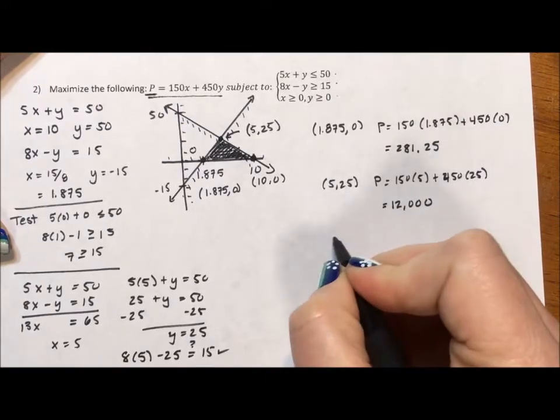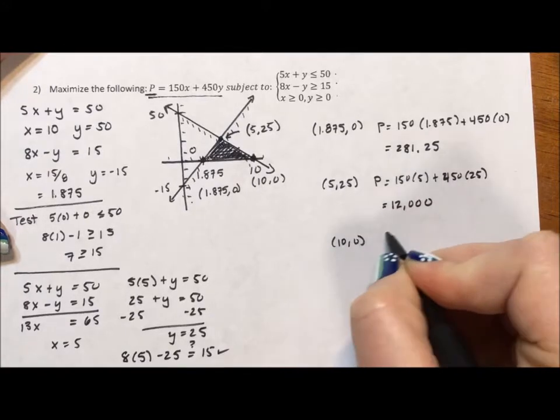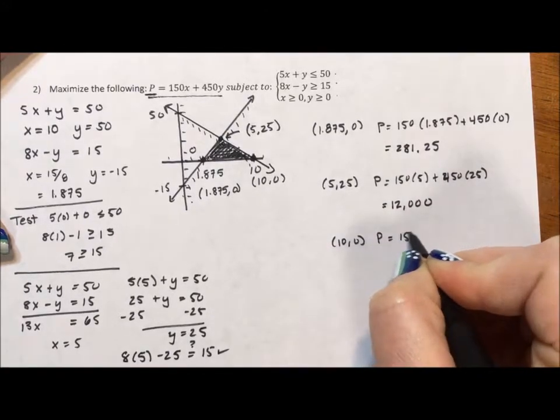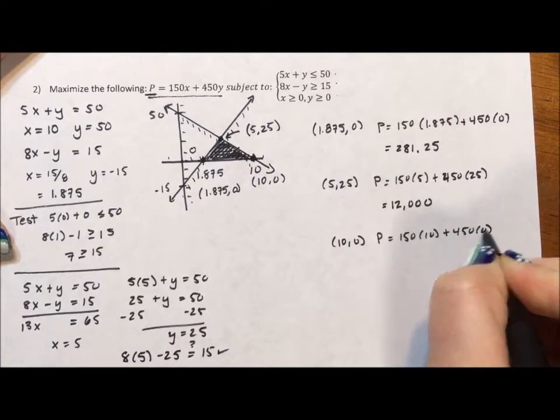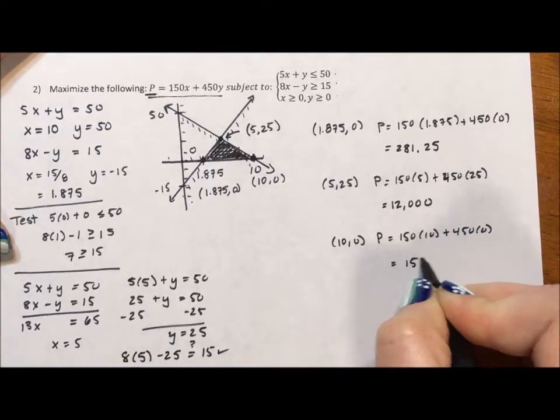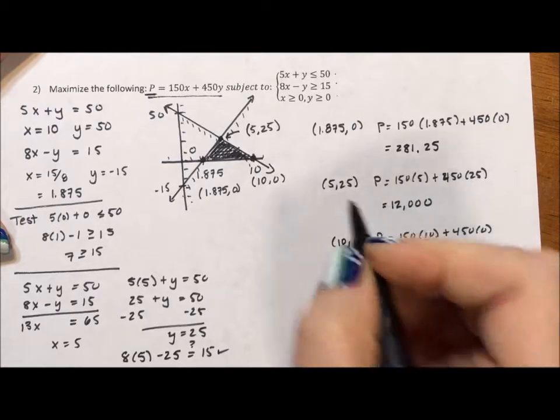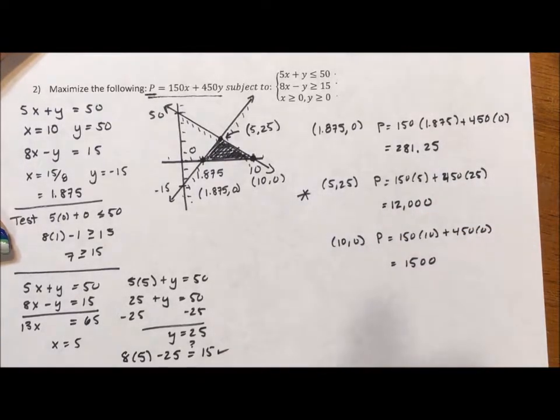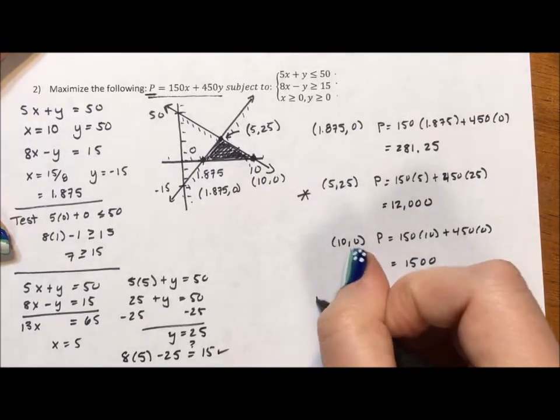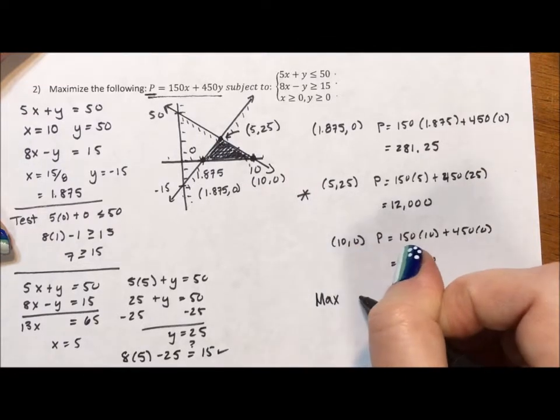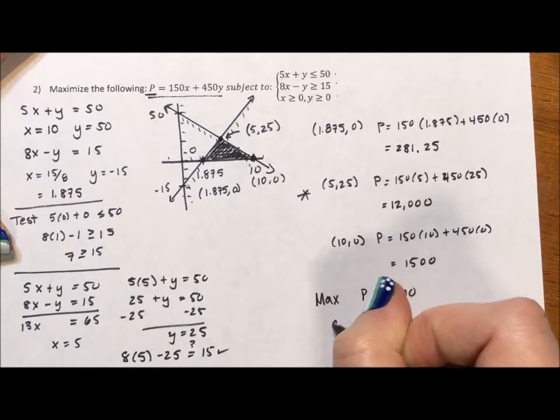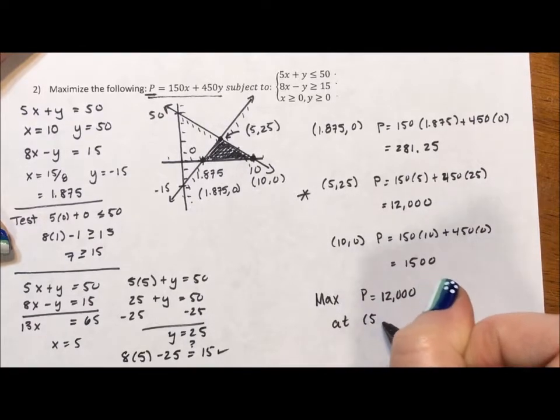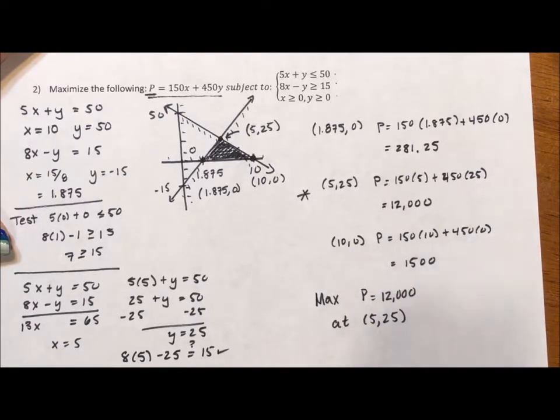And last but not least, I'm going to test out 10, 0. P is equal to 150 times 10 plus 450 times 0, which is going to be 1500. So where does this get maximized? The max is when P is equal to 12,000 at the point 5, 25.